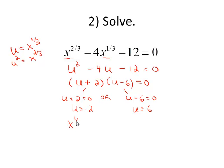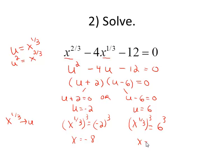Let's put x to the one-third back in for u. So x to the one-third equals negative 2. Raise both sides to the third power and I get x equals negative 8. For the other one, x to the one-third power equals 6. Raise both sides to the third power and 6 to the third power is 216. So our solution set here: negative 8 comma 216.